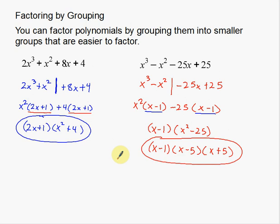That's factoring by grouping. Just make sure you do multiple steps of factoring. When you split the polynomial up, it's usually the left two terms and the right two terms, depending on the difficulty level of the problem. Thank you for watching the video, and we'll see you next time.